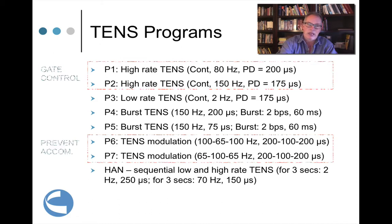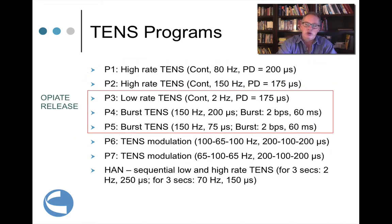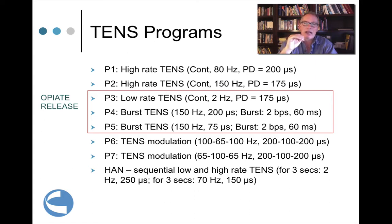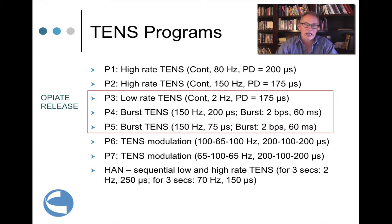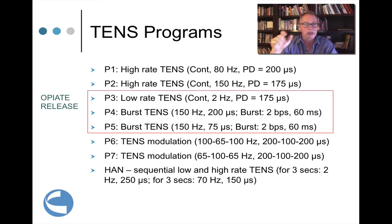The next group of pain control programs — P3, P4, and P5 — are all focused on having the body produce endogenous opioids. P3 is a low-rate constant program at 2 pulses per second, so the patient will feel pop, pop, pop, pop. The phase duration is very wide at 175 microseconds.